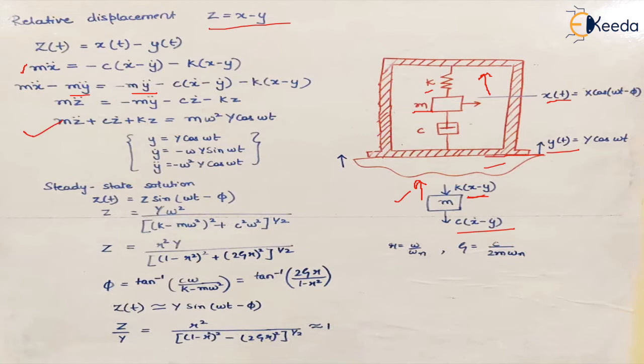We have already calculated the steady state solution. This steady state solution is given on the basis of forced damped vibration. So the value of z we get is this. If we want to find the ratio of z upon y, it will be r squared upon the square root of (1 minus r squared) whole square plus (2 zeta r) whole square, raised to the power 1 by 2.